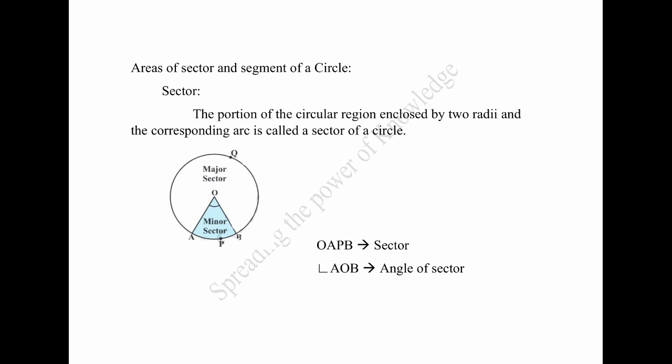Next, areas of sector and the segment of a circle. Sector: the portion of the circular region enclosed by two radii and the corresponding arc is called a sector of a circle. Shaded region OAPB is a sector of a circle with centre O. Angle AOB is called angle of sector.